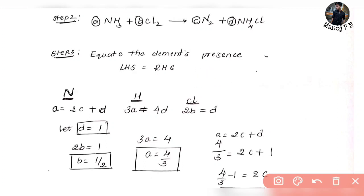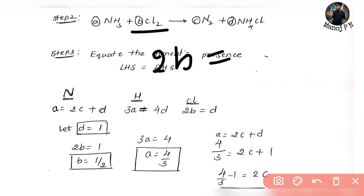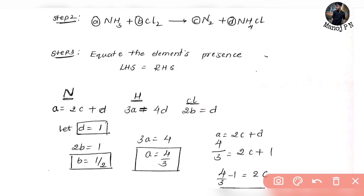Next, chlorine. Chlorine on LHS: Cl2 has 2 chlorine, so 2 times B, which is 2B. On RHS, NH4Cl has 1 chlorine, so 1 times D. The chlorine equation is: 2B = D. So we now have all three equations.